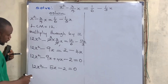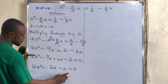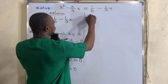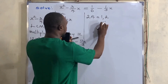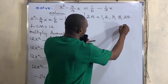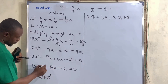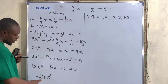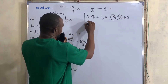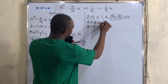The next step is to factorize this quadratic equation. We multiply the first term by the last term: 12x squared times minus 2 gives us minus 24x squared. We need two factors of 24 that multiply to give 24 and add to give 5. The factors of 24 include 1 and 24, 2 and 12, 3 and 8. We need 3 and 8 because 3 times 8 equals 24, and 3 minus 8 is minus 5.